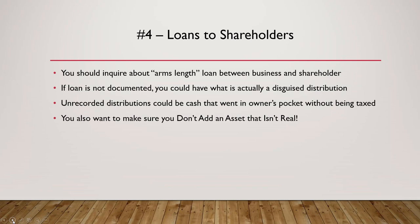Red Flag 4: Loans to shareholders. You have to ask whether a loan showing between the business and the shareholder is at arm's length — is it real, is it documented? If not, you could have a disguised distribution, meaning unrecorded cash that went in the owner's pocket without being taxed. If you're adding assets together to value the business, make sure you don't add an asset that isn't real, even though you see it on the books.